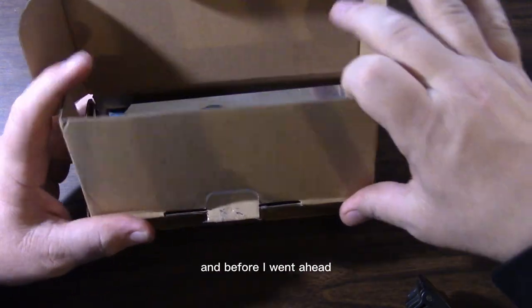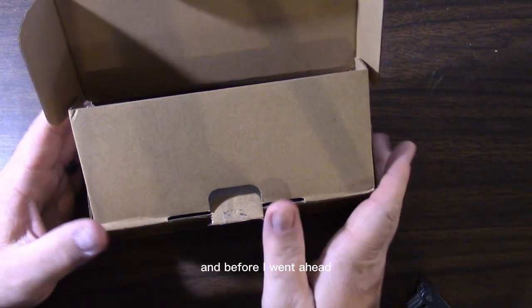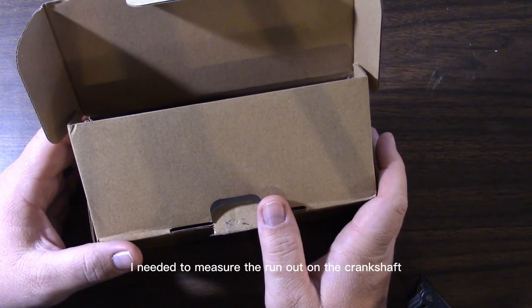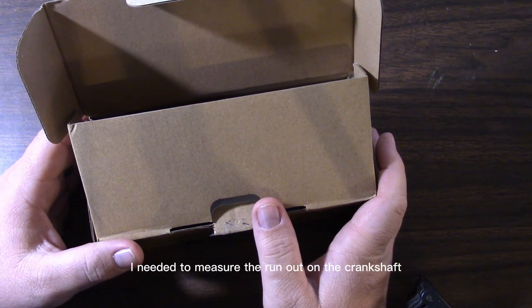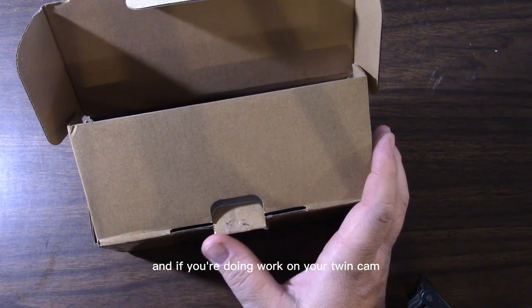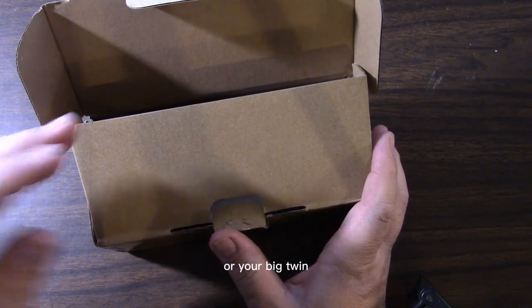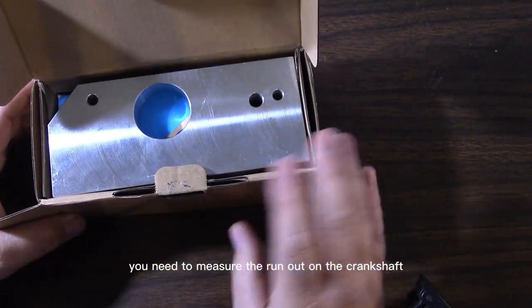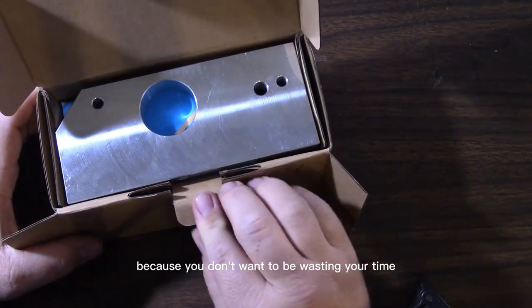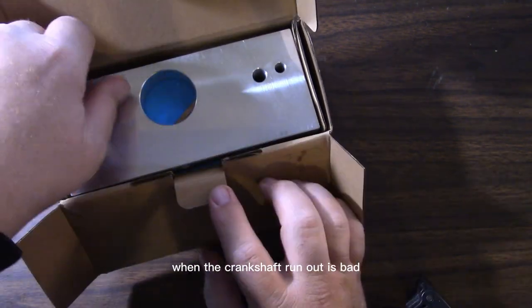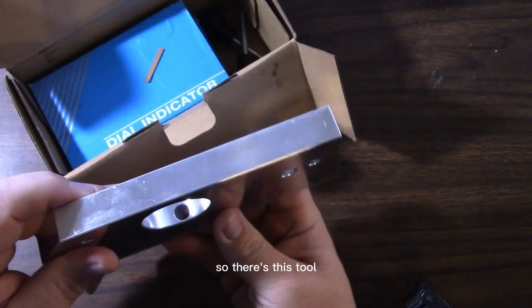It looks like we had some damage to the oil pump and some lifter issues. Before I went ahead and put a bunch of new parts in there, I needed to measure the runout on the crankshaft. If you're doing work on your Twin Cam or your big twin Evo motor, you need to measure the runout on the crankshaft because you don't want to be wasting your time putting a bunch of new parts in when the crankshaft runout is bad.